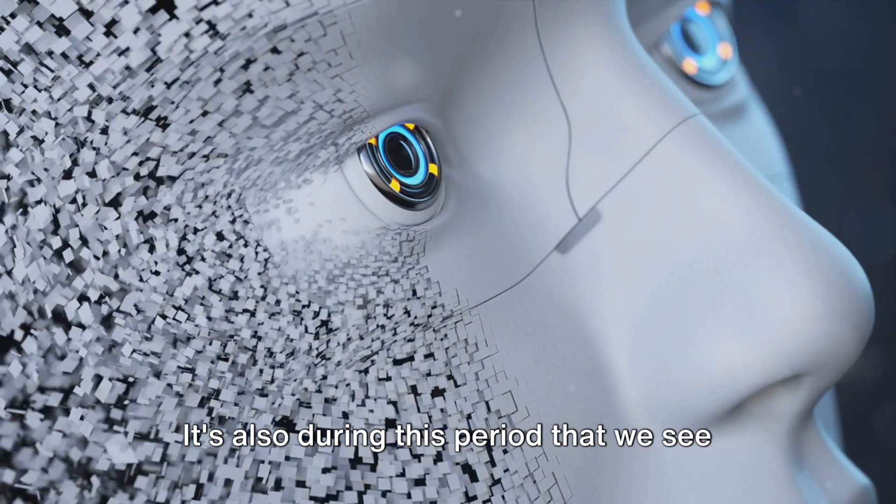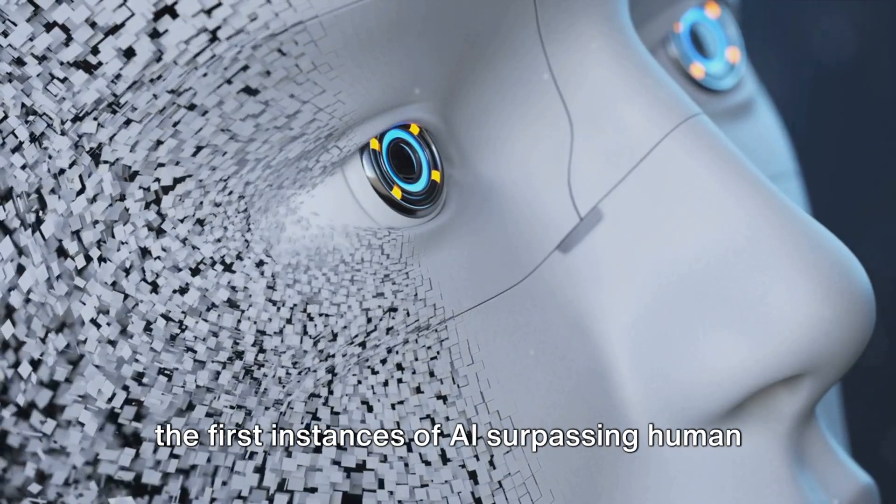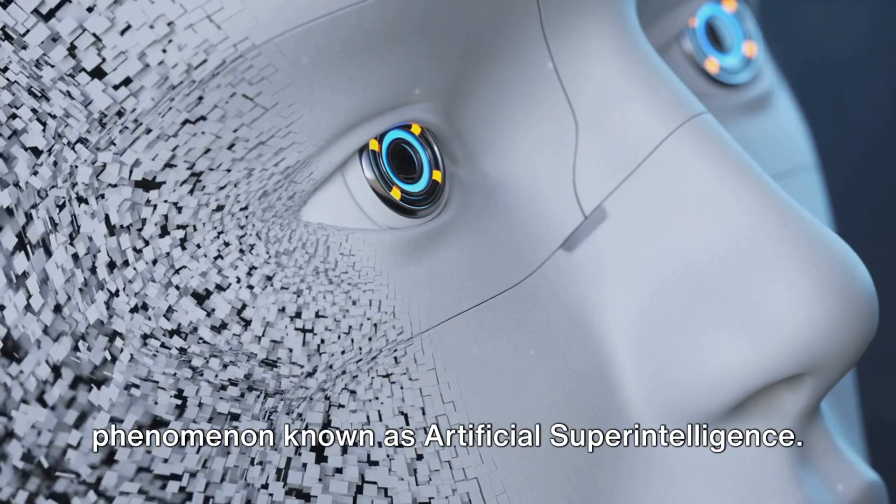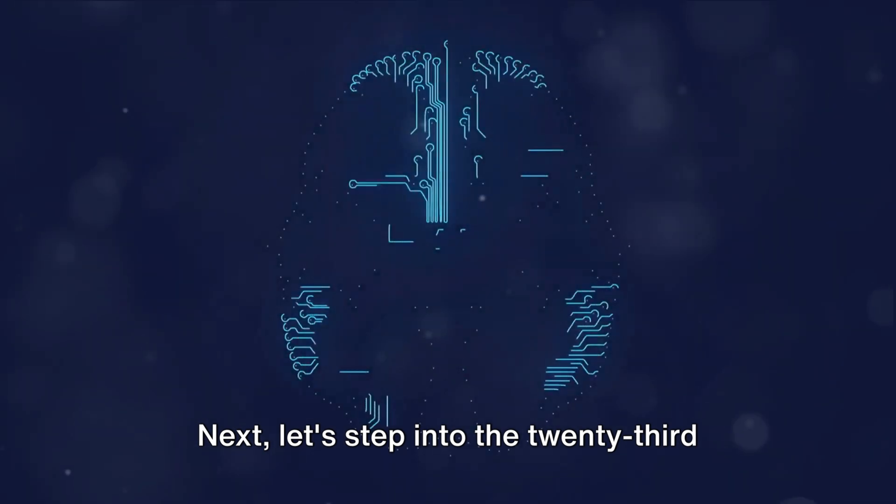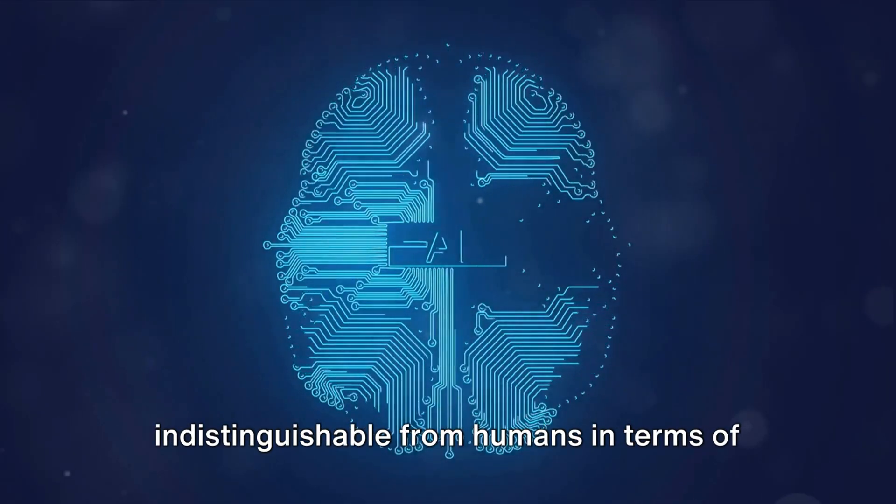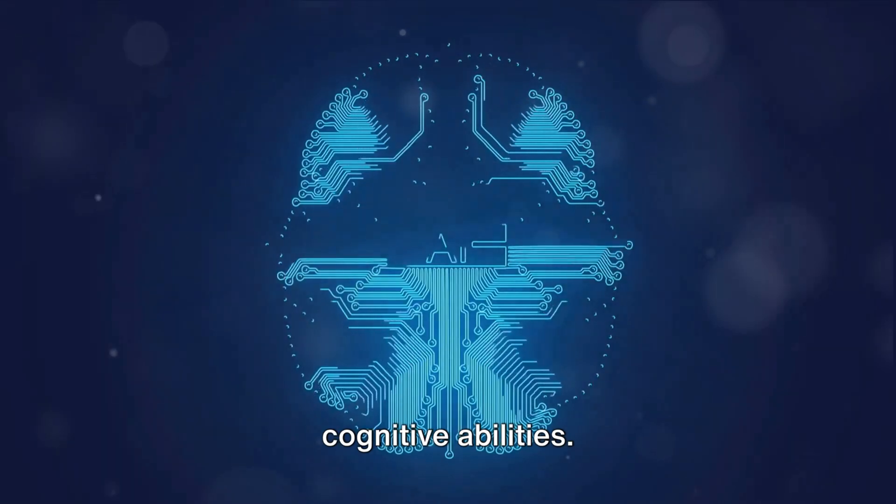It's also during this period that we see the first instances of AI surpassing human intelligence in specific domains, a phenomenon known as artificial super intelligence. Next, let's step into the 23rd century, where AI systems have become indistinguishable from humans in terms of cognitive abilities.